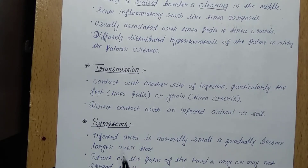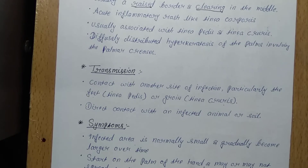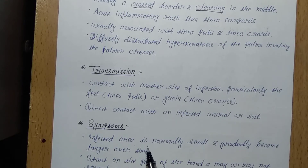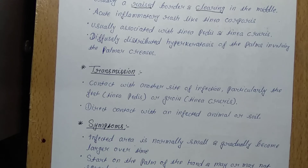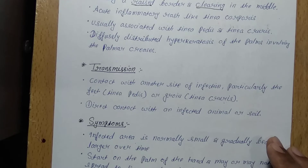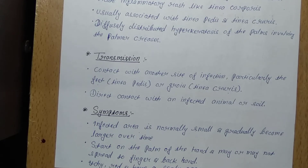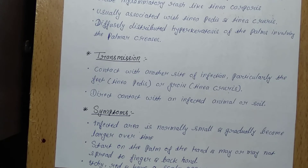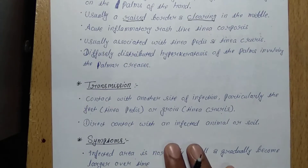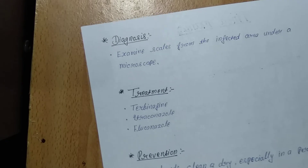The symptoms of tinea manuum: the infected area is normally small and gradually becomes larger over time. It starts on the palm — this fungal infection first starts on the palm of the hand and may or may not spread to the fingers and back of the hand. The affected area presents with itchy, red, and scaly appearance.